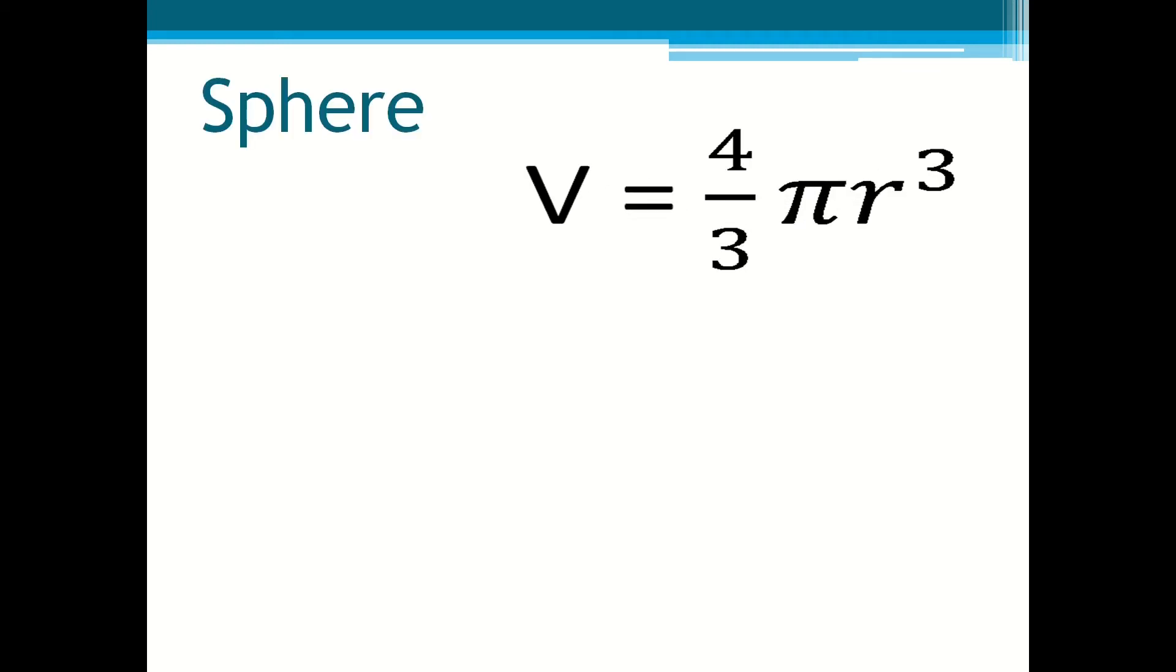Spheres. Volume equals 4 over 3 pi r cubed. V is always going to be volume and R is equal to radius.